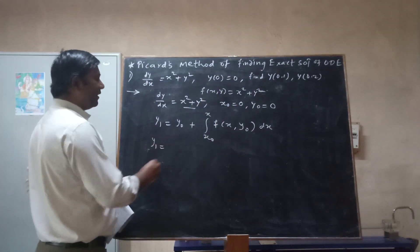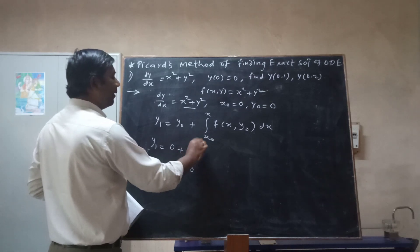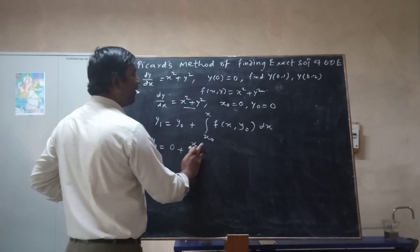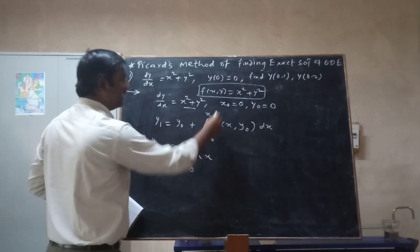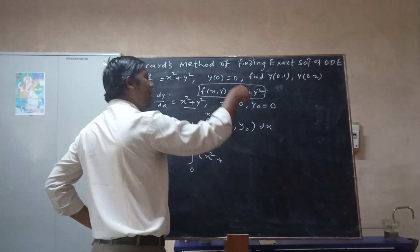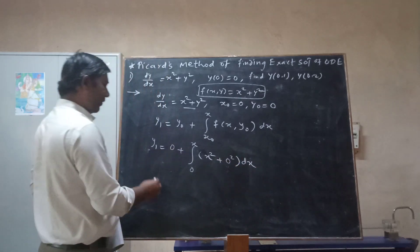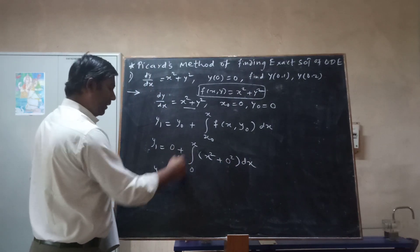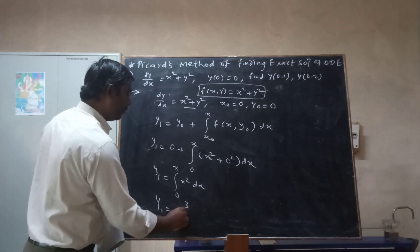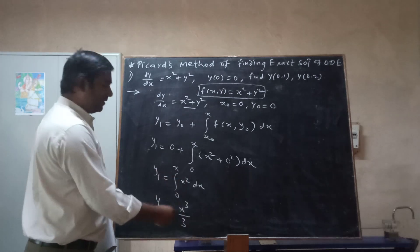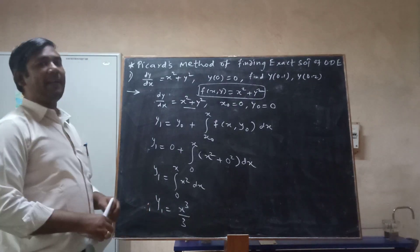Now computing y1: y0 = 0, x0 = 0. For f(x, y0), we substitute y0 = 0 into x squared plus y squared, giving x squared + 0 = x squared. So y1 = 0 + integral from 0 to x of x squared dx = x cubed by 3. This is your first iterative general solution.